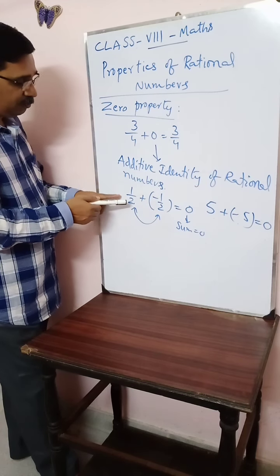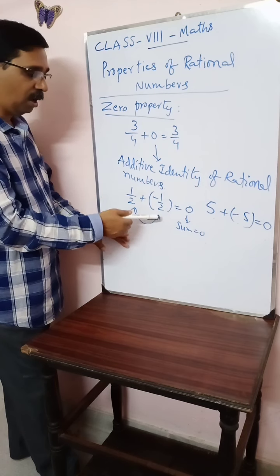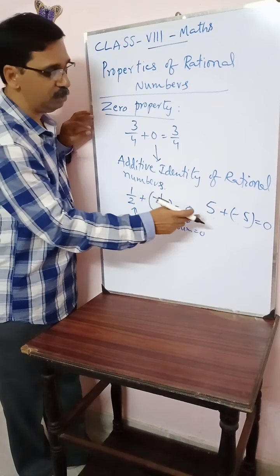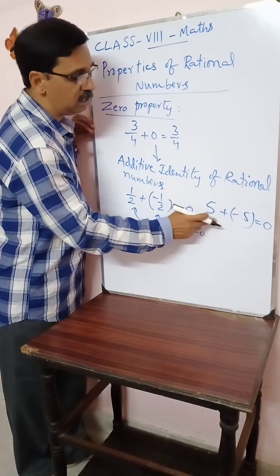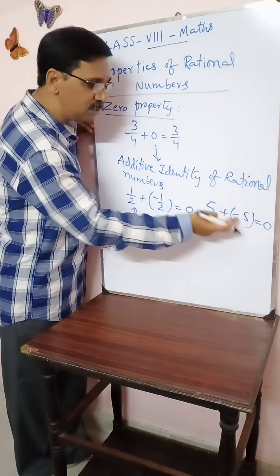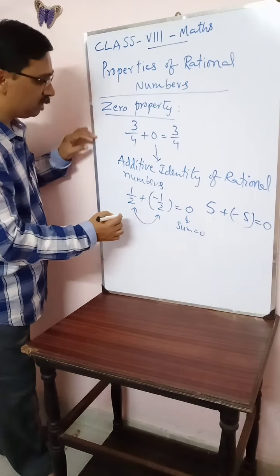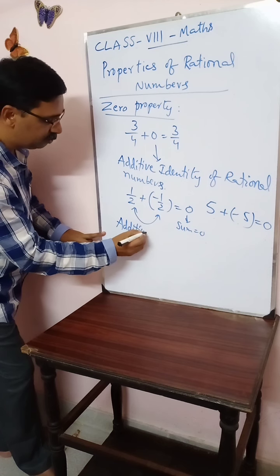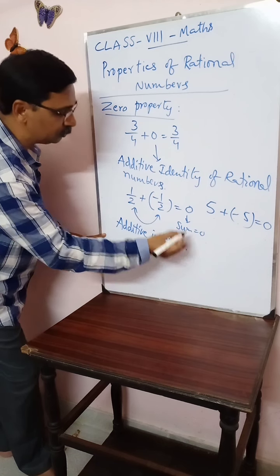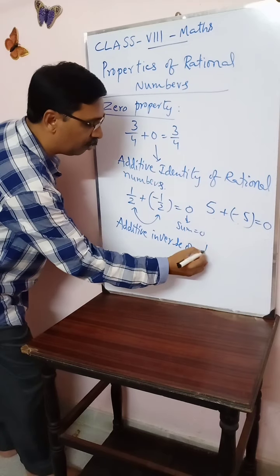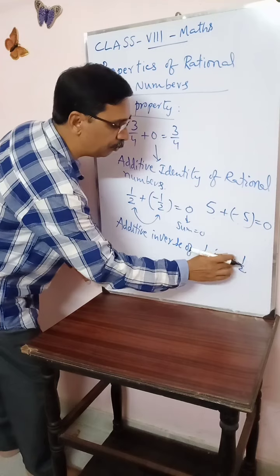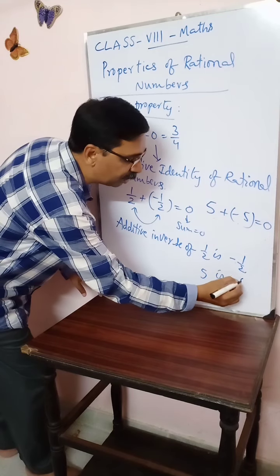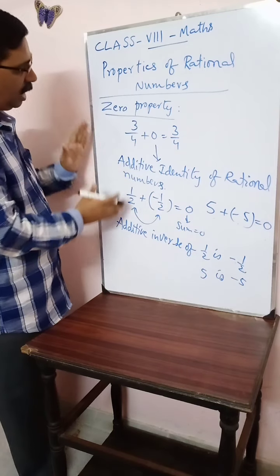So the additive inverse of 1/2 is minus 1/2, and the additive inverse of minus 1/2 is 1/2. Similarly, the additive inverse of 5 is minus 5, and the additive inverse of minus 5 is plus 5. This is called the inverse property — additive inverse.